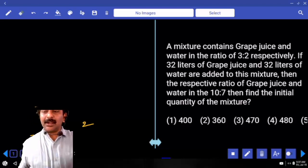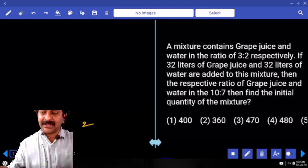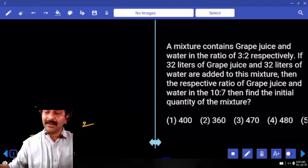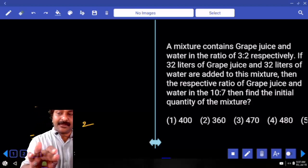A mixture contains grape juice and water in the ratio 3 is to 2 respectively. If 32 liters of grape juice and 32 liters of water are added to this mixture, then the respective ratio of grape and water in the mixture is 10 is to 7. Find the initial quantity of the mixture.